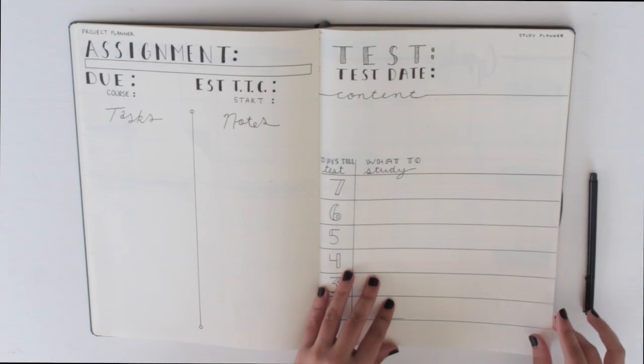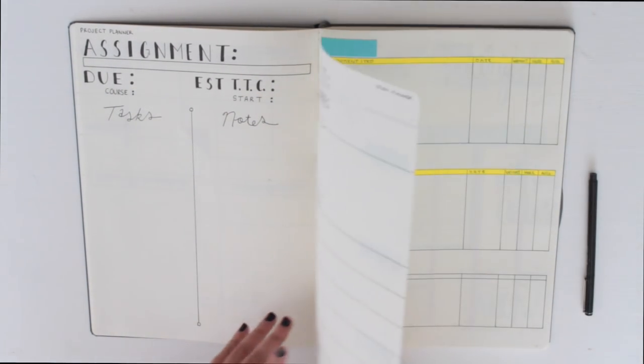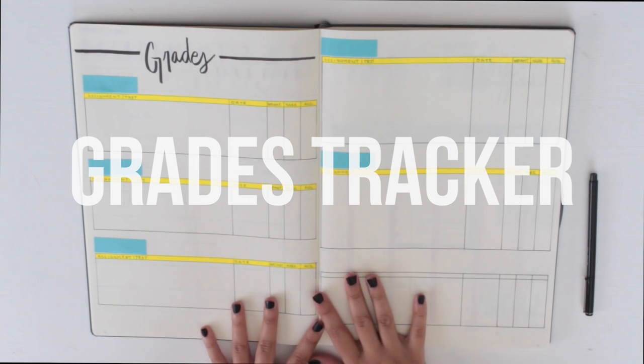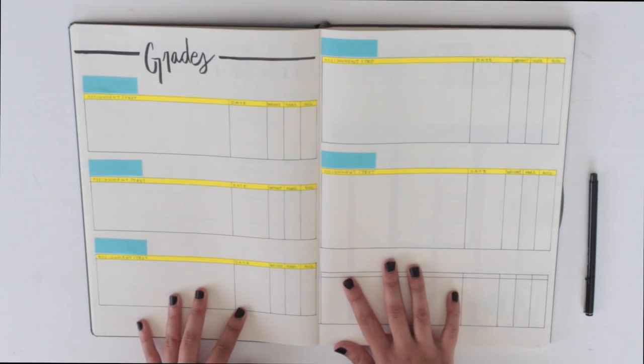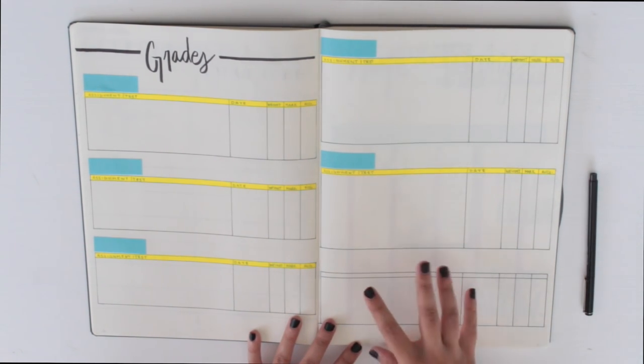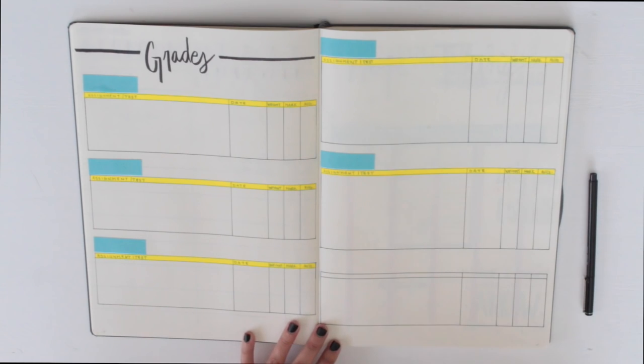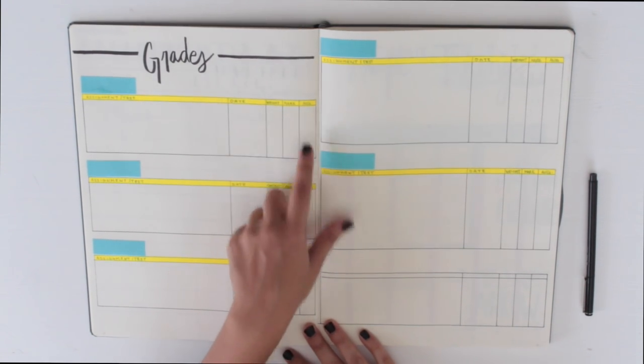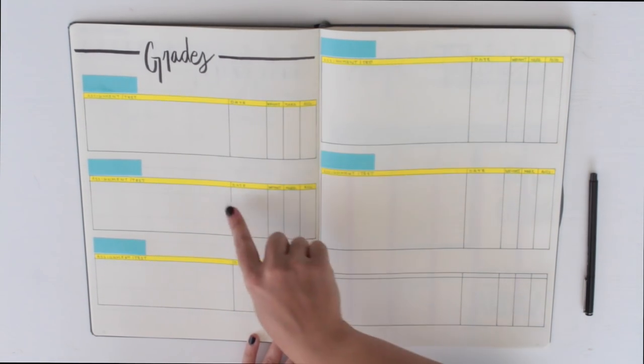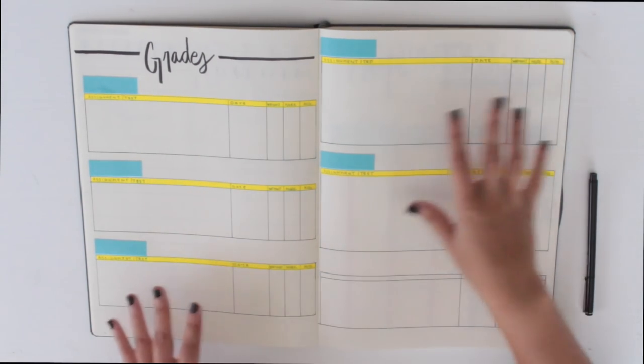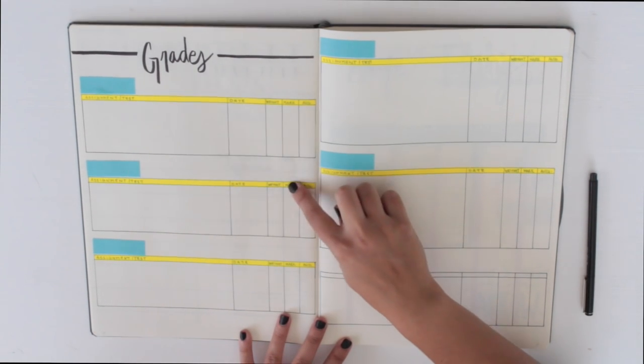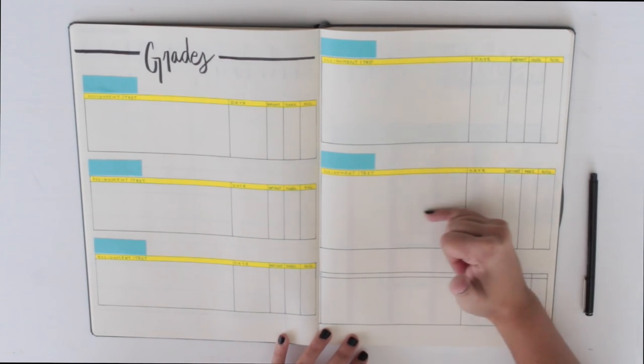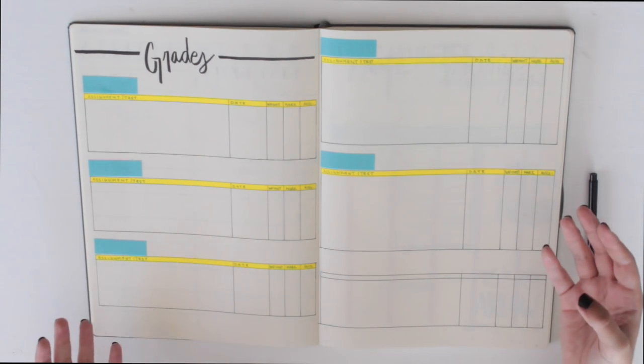This is where we left off in the last video at the study planner and project planner. When you flip the page, ba-boom, this is the grades tracker. These marked off blue sections are my course codes, so I blocked that out. The yellow washi tape I used to add color to this page. For each class I made a table where I can put the assignment or test, the date I wrote it, the weight of that assignment, the mark I got, and what my average is, keeping track of my average for that class. This yellow washi tape I got from Michaels fits these dots perfectly. I didn't have to do any cutting but it adds a nice pop of color.